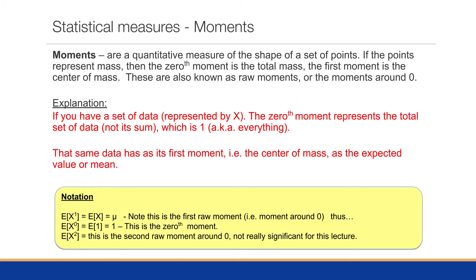Let's get a better explanation of that. Let's say you have a set of data represented by X. The zeroth moment represents the total set of data, not its sum, which is one, which is everything. We would denote this by the expected value of X zero, here in the middle of the notation down at the bottom. What's interesting is that if we set the expected value of X zero, that would be the zeroth moment. And anything to the zero power is one. And so therefore, the expected value of one is one.